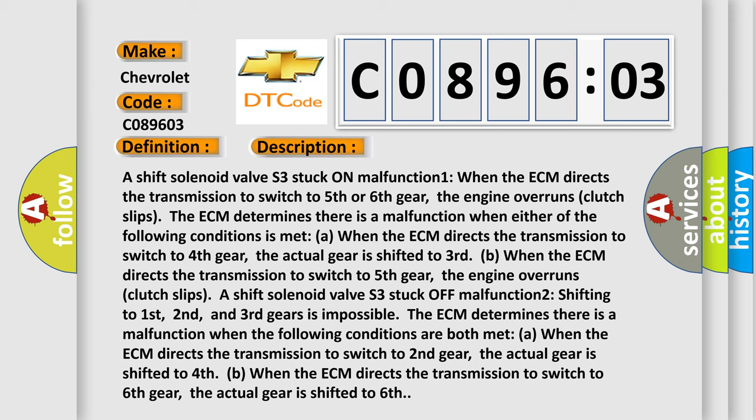A shift solenoid valve S3 stuck off malfunction 2. Shifting to first, second, and third gears is impossible. The ECM determines there is a malfunction when the following conditions are both met: when the ECM directs the transmission to switch to second gear, the actual gear is shifted to fourth B, or when the ECM directs the transmission to switch to sixth gear, the actual gear is shifted to sixth.